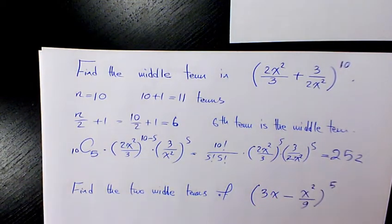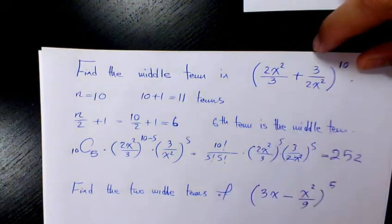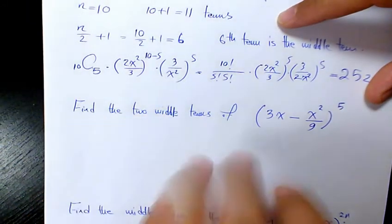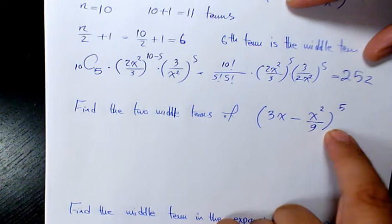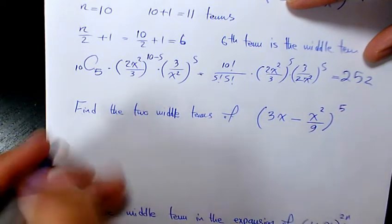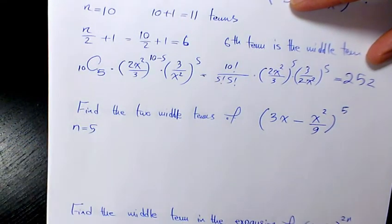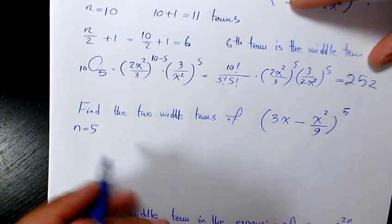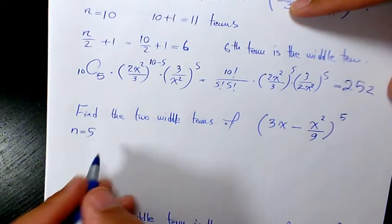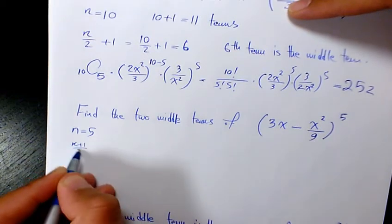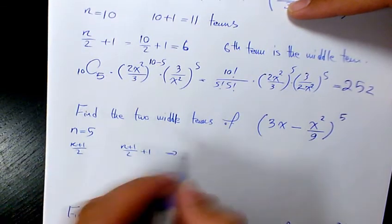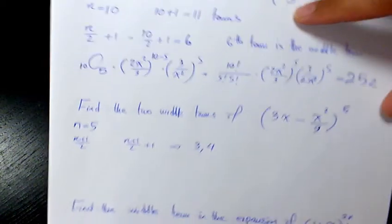So 252 is the middle term in this expansion. Let's look at the next example: find the two middle terms of (3x − x²/9) to the power of 5. Since n is 5, the number of terms is going to be 6, so we have two middle terms. We find them using (n+1)/2 and (n+1)/2 + 1, which gives 6/2 = 3 and 4 — so the 3rd and 4th terms.